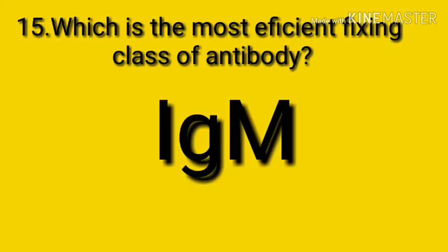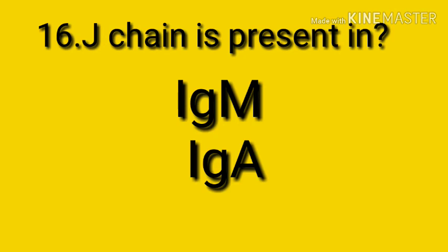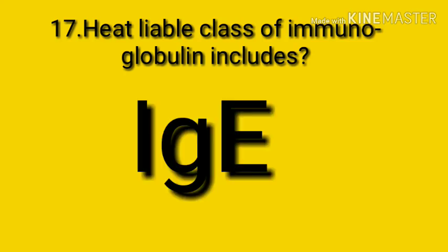Question number fifteen: which is the most efficient complement-fixing class of antibody? The answer is IgM. IgM is the most efficient complement-fixing class of antibody. Serum IgM exists as a pentamer in mammals and comprises approximately 10% of normal human serum immunoglobulin content. Question number sixteen: J chain is present in immunoglobulin M and immunoglobulin A. A J chain is a protein component of antibodies present in IgM and IgA.